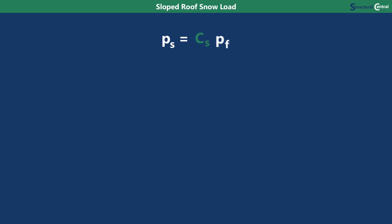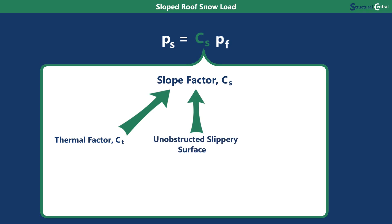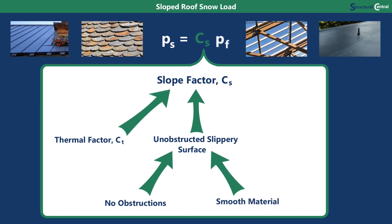The slope factor takes into account the slope of the roof, but also considers how warm and how slippery the roof is. Its value is determined using one of three graphs found in ASCE 7. You select the graph based on the value previously used for CT. The value then comes from either the dashed line or solid line depending on whether the roof is considered an unobstructed slippery surface. To qualify, there can't be any obstructions that would prevent snow from sliding, and the surface must be a smooth material like metal, slate, glass, or a bituminous rubber or plastic membrane. Once you know which line applies, you get the CS value from the graph using the roof slope, multiply it by PF, and you've determined the sloped roof snow load.